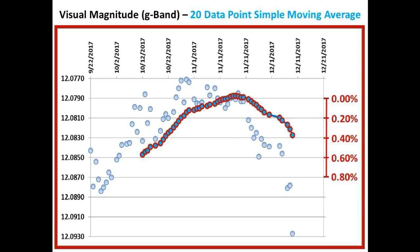The light blue circles are Bruce Gary's G-band measurements, and the connected darker blue circles with the red borders form the 20 data point simple moving average curve. As you can see, we were approximately 0.4% below the highest flux level reached by the 20 data point simple moving average.